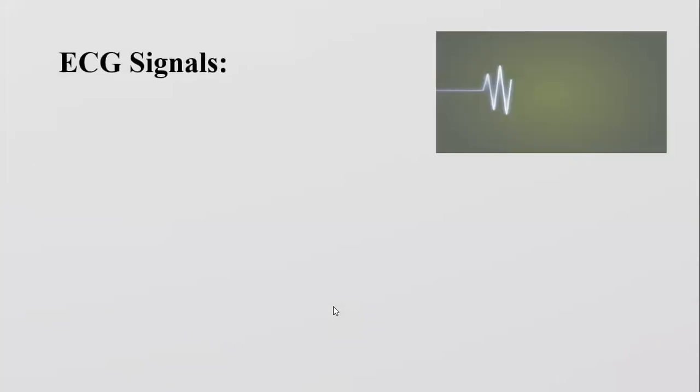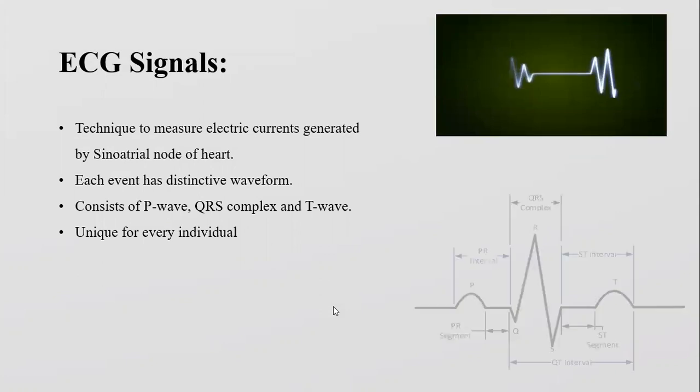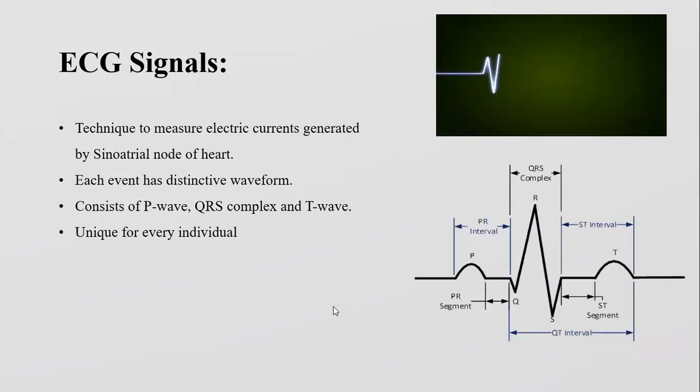What are ECG signals? Electrocardiogram is actually the measure of electric currents generated by the SA node of the heart. These electric currents are recorded using surface electrodes. This figure shows the normal ECG signal. It consists of P wave, QRS complex, and T wave. It is unique for every individual.